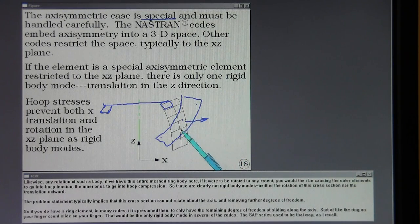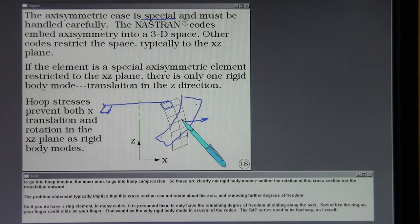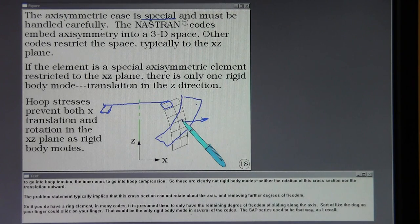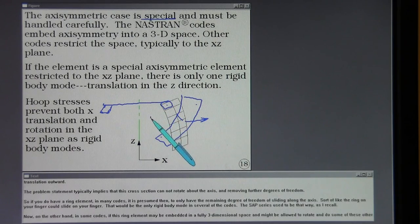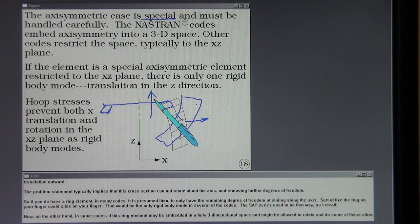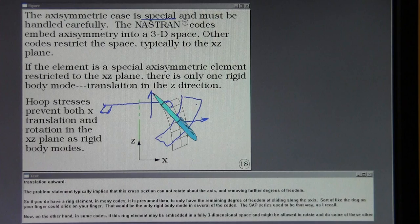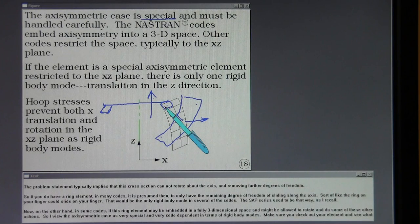The problem statement typically implies that this cross section cannot rotate about the axis and removing further degrees of freedom. So if you do have a ring element in many codes, it is presumed then to only have the remaining degree of freedom of sliding along the axis. Sort of like the ring on your finger could slide along your finger. That would be the only rigid body mode in several of the codes. The SAP series used to be that way as I recall.